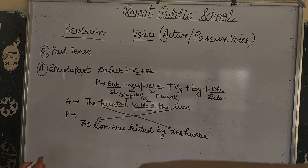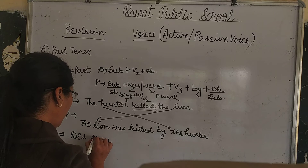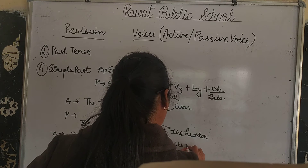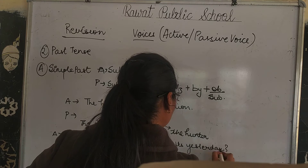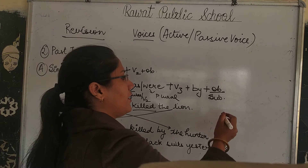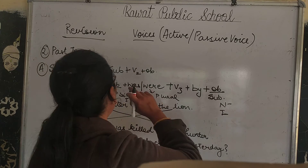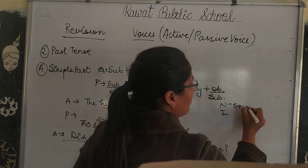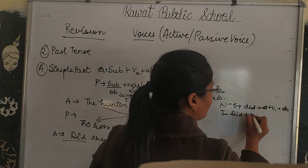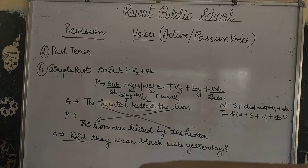Now let's look at the interrogative example. 'Did they wear black suits yesterday?' When we have an interrogative or negative sentence in simple past, the formula changes — Subject plus 'did not' plus verb first form plus object. In questions, 'did' is used as a helping verb with verb first form and object.